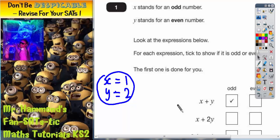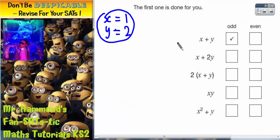If we look at the first expression that's already been done for us, using these numbers, we'd have instead of x plus y, x would be 1 and y would be 2. 1 plus 2 would actually give us 3, which is odd as being ticked. Now we're just going to do a similar sort of thing for the other expressions.